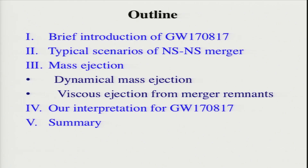This is the outline of this talk. First, I'd like to briefly review the observational result of GW170817. Then I'd like to summarize the typical scenarios for binary neutron star merger based on the latest numerical relativity result. Then I'll summarize the mass ejection mechanism associated with binary neutron star merger. And then I'll present the interpretation of the observational result — meaning the optical and infrared observational result — for GW170817. And then let me summarize my talk.